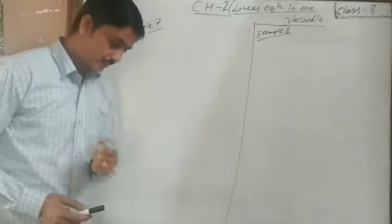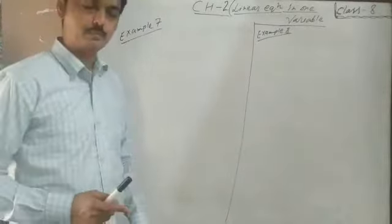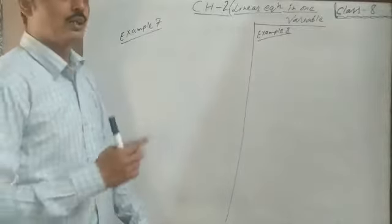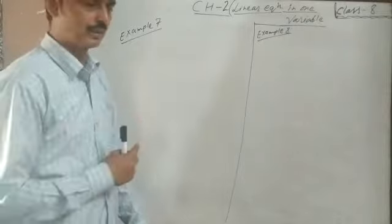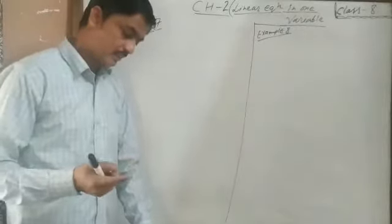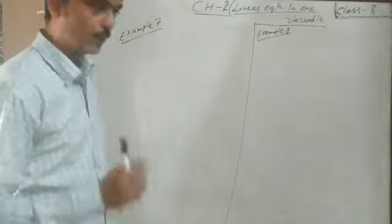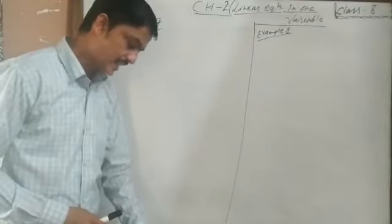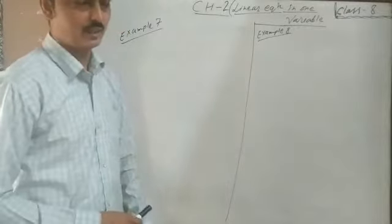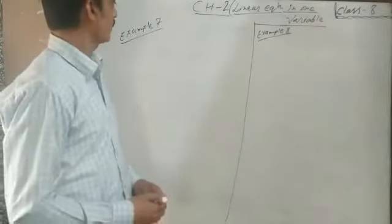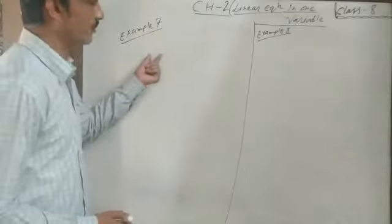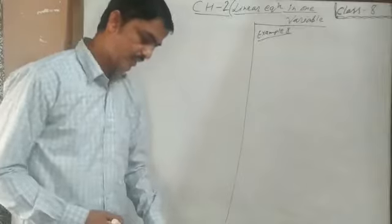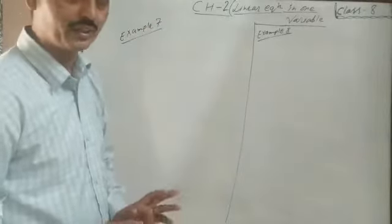In this question, the present age of the mother is 3 times the present age of Sahid. Two characters are given: the mother and her son Sahid. One more condition is given: after 5 years, their ages will add up to 66 years. So first, we let the present age of Sahid be defined.